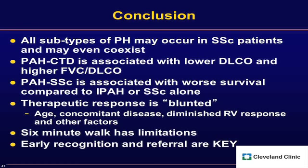In conclusion: all subtypes of pulmonary hypertension may occur in scleroderma patients and may coexist. CTD-associated PAH is associated with lower diffusion capacity and higher FVC-to-diffusion ratio. PAH in scleroderma is associated with worse survival compared to idiopathic PAH or scleroderma alone, and the therapeutic response is blunted — age, concomitant disease, diminished RV response, and other factors are likely responsible. The six-minute walk test has limitations in this population. Early recognition and referral are key.